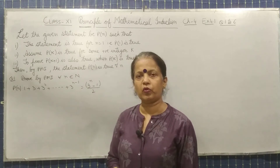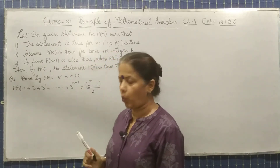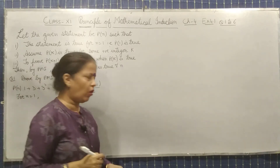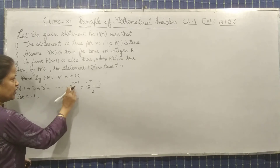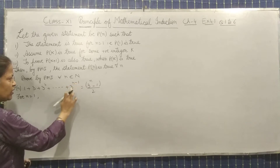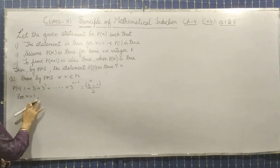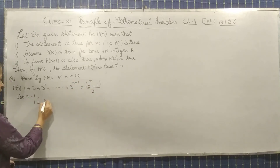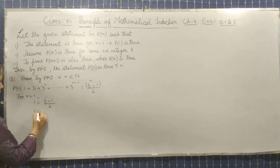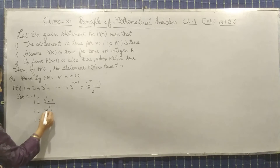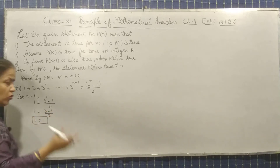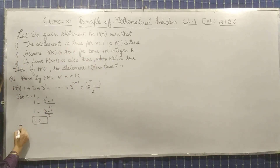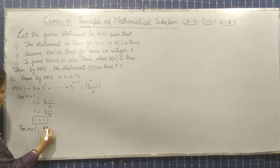The first point: prove the given statement is true for N equal to 1. For N = 1, we check: the left-hand side is 1, and the right-hand side gives (3¹ − 1)/2 = (3 − 1)/2 = 2/2 = 1. Both sides are equal, so for N = 1, the statement is true. Therefore, P(1) is true.